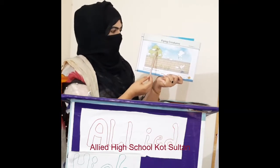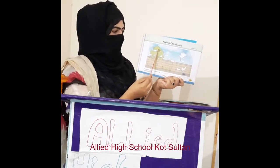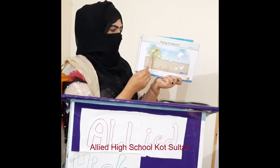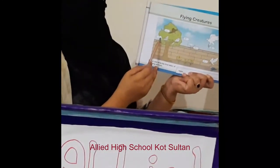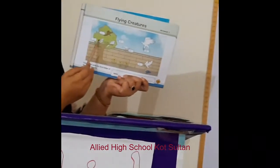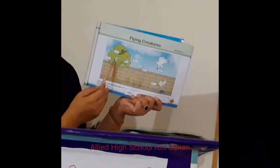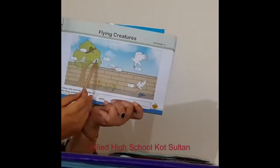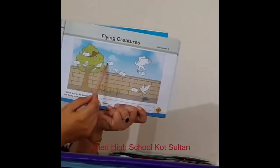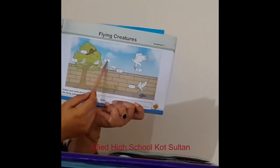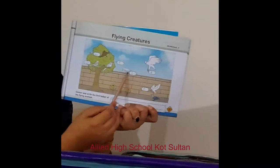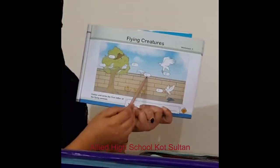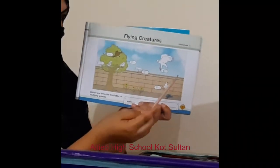Is picture mein aapko nazar aa rahi hai Mina. Toh aapne ye jo white box hai, yahan pe Mina ka first letter M write karna hai. Next aapke paas Sparrow hai — Sparrow ka S aapne white box mein write karna hai. Next hamare paas hai Parrot — Parrot ka P aapne is box mein write karna hai. Then next hamare paas hai Crow — Crow ka C aapne idhar write karna hai. Inke first letter aapne yahan pe write karne hain, inke name ke.